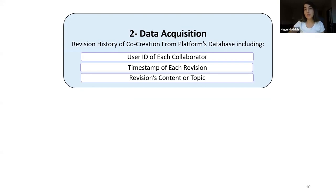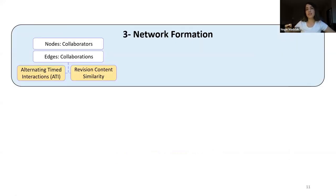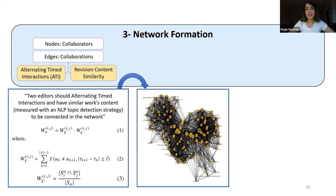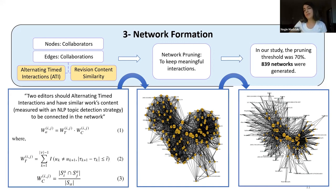We get the data using the revision history of the Wikipedia API. We need the user ID of each collaborator, the timestamp of their revisions, and the content of their revisions. The start dates of the articles we selected are somewhere between 2009 and 2020–22. We form the networks such that each editor is one node and the collaboration between each pair is the edge. The weight of these edges is calculated by alternating time interactions — a measure we introduced to capture the timely alternating activities of two editors — and also by the similarity of the content of their revisions, calculated using NLP techniques. We create and prune the networks based on a threshold on edge weights, ultimately reaching more than 800 networks.